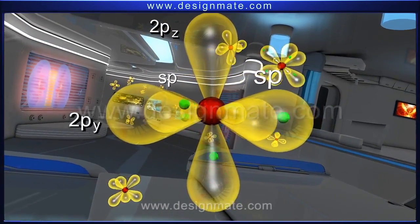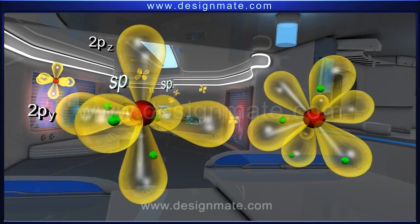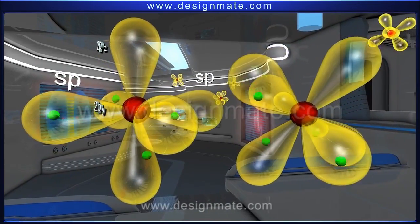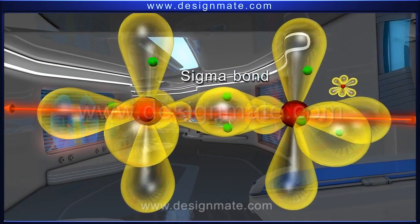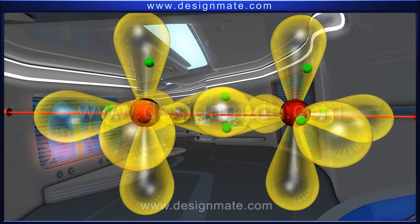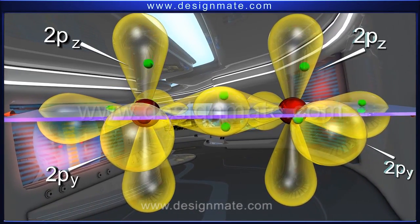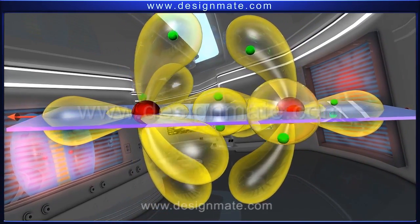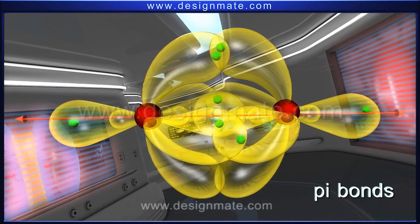Imagine another sp-hybridized carbon atom approaching this carbon atom, such that the sp-hybrid orbitals of the two carbon atoms face each other. These orbitals overlap along the internuclear axis, resulting in a sigma bond. Each of the carbon atoms also has two unhybridized p orbitals, namely the py and pz orbitals. These orbitals, which lie above and below the plane of sigma bond, also come very close to each other and overlap laterally, resulting in the formation of two pi bonds between the two carbon atoms.